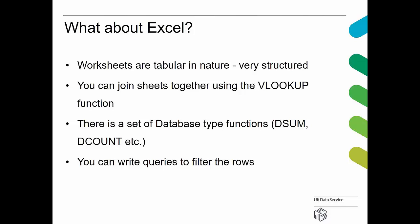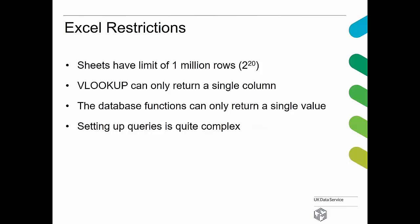This leads to the disadvantages of Excel. You're limited to a million rows, which in today's big data environments is becoming increasingly a limitation. VLOOKUP can only return a single column, which is typically not what you want when joining tables — you want multiple columns from multiple tables. Database functions can only return a single value. And setting up queries can be complex and not particularly intuitive.